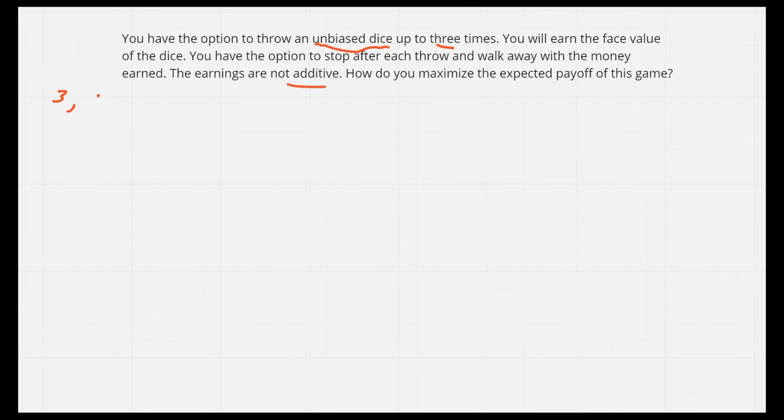For example, if you did three throws and got three, six, and two respectively in first, second, and third, you only get the final money, not six or three. How do you maximize the expected payoff of this game?